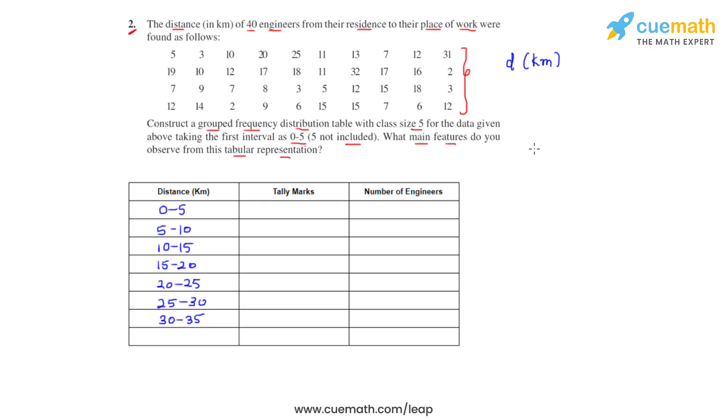So we write the tally marks as 1, 2, 3, 4, 5 and we write the frequency as 5. Similarly for the second class interval there are a total of 11 engineers, so we write the tally marks and the frequency which is 11. Again in the class interval 10 to 15 we have 11 engineers, so we again write the tally marks and the frequency.